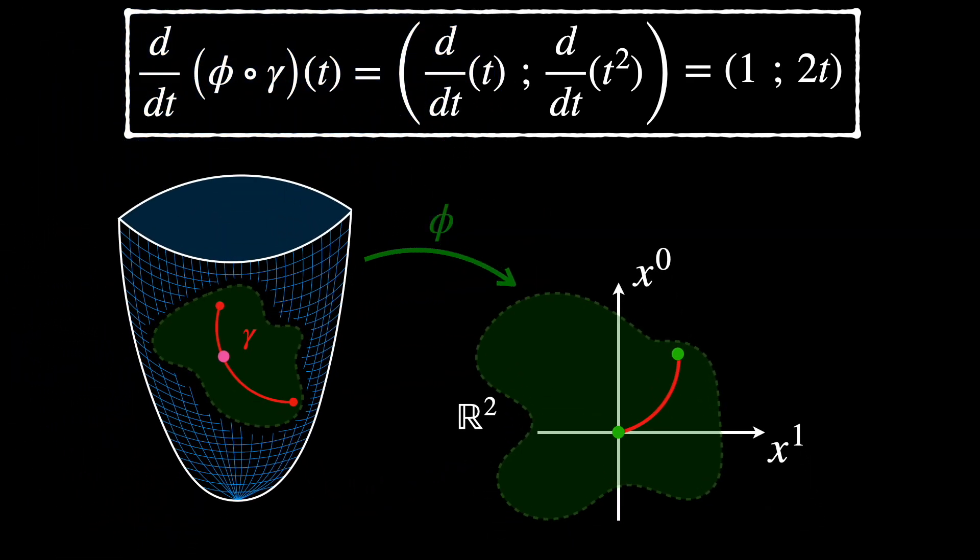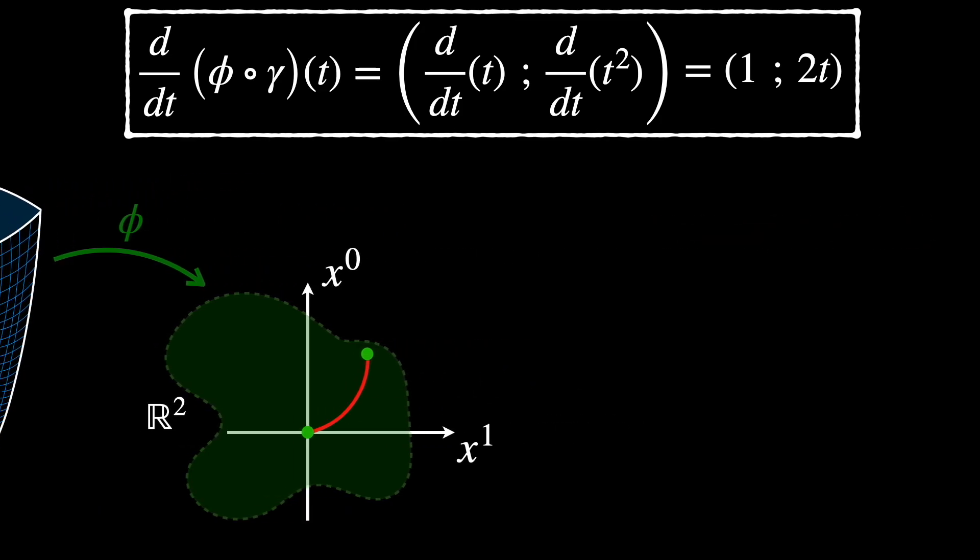At this point, one could say that the tangent vector 1, 2T lives in the space R2, where Phi lands. But this is also not completely true. The tangent vector actually lives in the tangent space of the point Phi composed with Gamma of T, which is actually another distinct copy of R2.